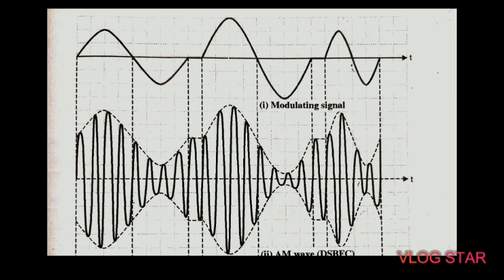Thus all the information can be conveyed by only one sideband. The AM wave consists of three frequencies: carrier frequency, upper sideband, and lower sideband. The double sideband full carrier system is also known as AM signal because it has double sidebands — LSB and USB — and one carrier signal, that is full carrier. That's why AM is also known as double sideband full carrier system.